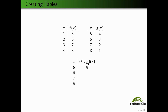f composed with g of 6: g sends 6 to 3, then f sends 3 to 7. So f composed with g of 6 equals 7. Similarly, g sends 7 to 2, and f sends 2 to 6, so f composed with g of 7 is 6. For 8: it goes into g first, g sends 8 to 1, then we're looking at f of 1, and f sends 1 to 5. And there's our complete table for the composition of f and g.